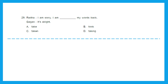Question 29: 'Radha: I am sorry, I am dash my words back. Gagan: it's all right.' The options are take, took, taken, or taking my words back. The sentence is in the present continuous because it expresses an action ongoing in the present. So the answer is option D, 'taking.' Radha said: I am sorry, I am taking my words back.